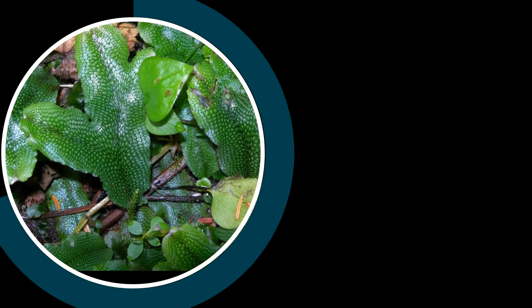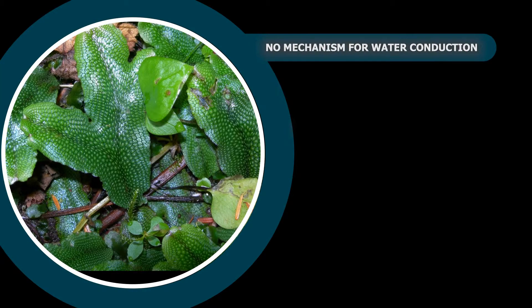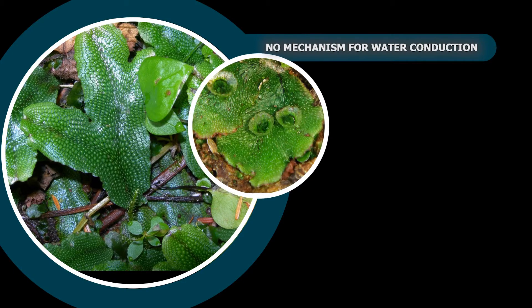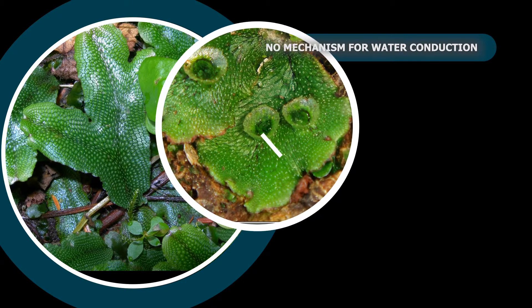Bryophyte plants do not have a mechanism to conduct water, food, and minerals through roots and stem. They absorb water and dissolved minerals through the gametophore, which is found around the leaf.